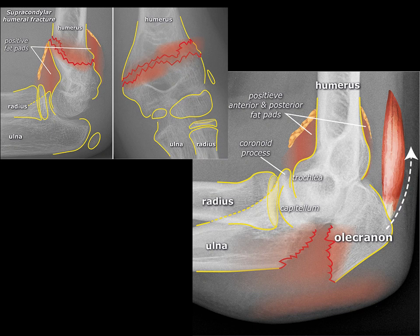Here are further examples of anterior and posterior fat pads that get elevated because of a joint effusion, whether it's filled with water or with blood.